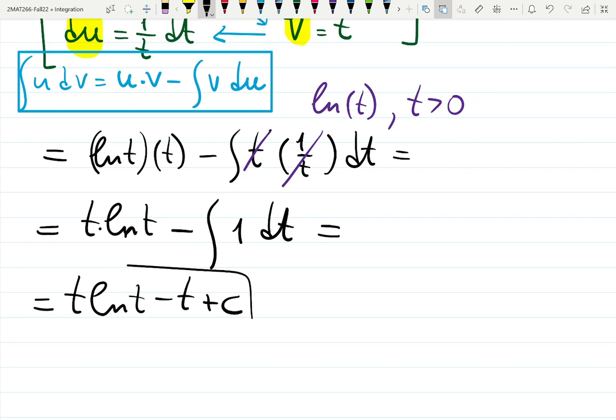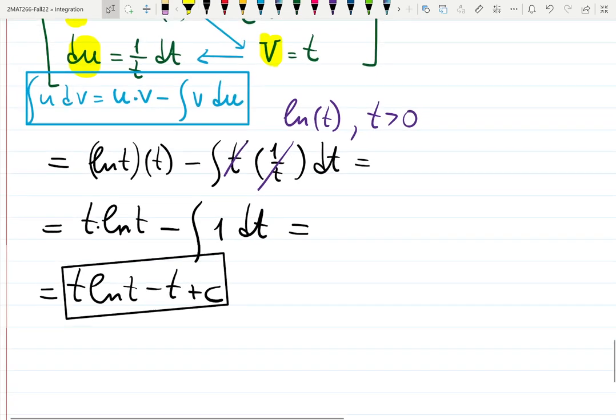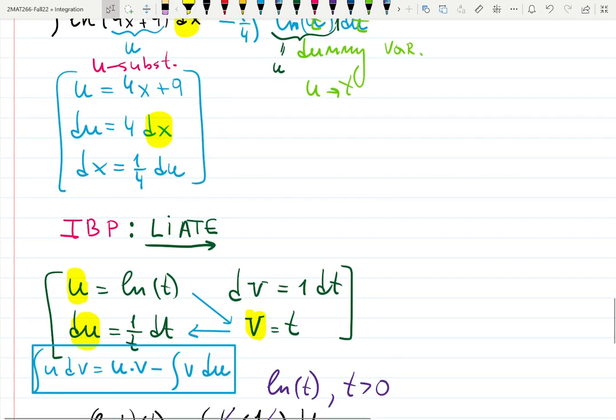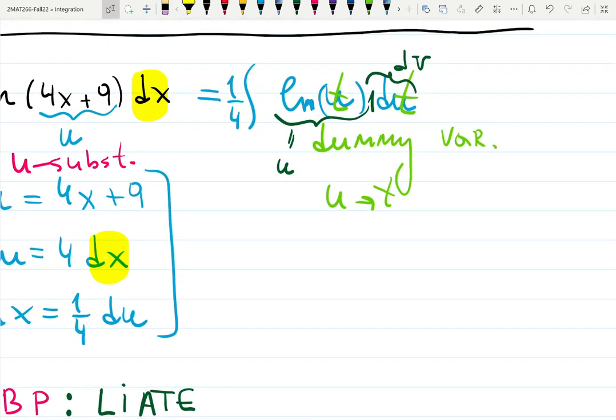That could be the final answer, but we did start with a different variable called x. So let's go back to x notation. To do that we need to remember what did we do in the first place. So we renamed u to be some random variable t, but before that u was chosen to be 4x plus 9. So everywhere you see t you should plug 4x plus 9.